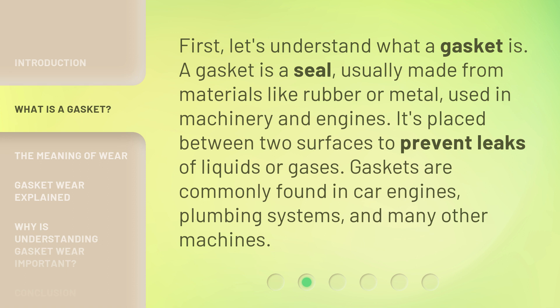First, let's understand what a gasket is. A gasket is a seal, usually made from materials like rubber or metal, used in machinery and engines. It's placed between two surfaces to prevent leaks of liquids or gases. Gaskets are commonly found in car engines, plumbing systems, and many other machines.